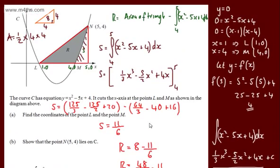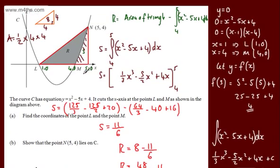All I've done is considered the basic area of a triangle and then subtracted away the integral in the given interval between 4 and 5.